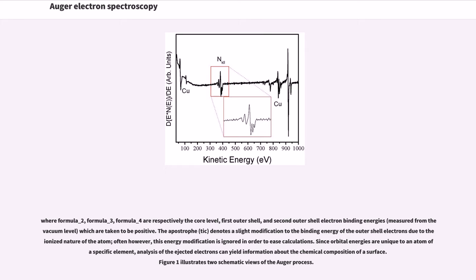The apostrophe denotes a slight modification to the binding energy of the outer shell electrons due to ionized nature of the atom. Often however, this energy modification is ignored to ease calculations. Since orbital energies are unique to an atom of a specific element, analysis of the ejected electrons can yield information about the chemical composition of a surface. Figure 1 illustrates two schematic views of the Auger process.